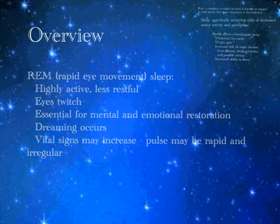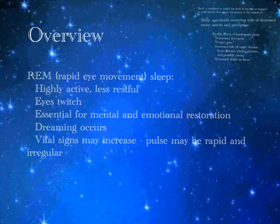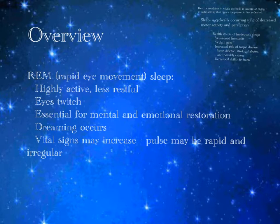Now let's talk about REM sleep, or rapid eye movement sleep. This is a very highly active sleep — the person may be talking in their sleep, thrashing, tossing, turning. It's less restful. It's named rapid eye movement sleep because your eyes twitch. This type of sleep represents about 25% of the time we spend sleeping, and it is really essential for mental and emotional restoration. This is the stage where most of our dreaming occurs — our very vivid dreams. Our dreams are really the body's way of trying to process our mental and emotional experiences from our waking life. So if you interrupt REM sleep a lot, a person might be more susceptible to anxiety or depression.